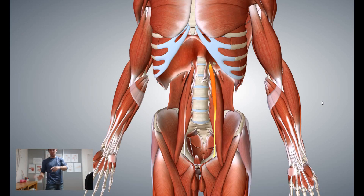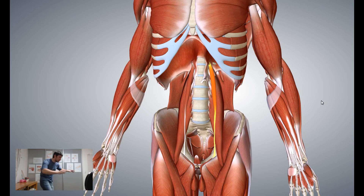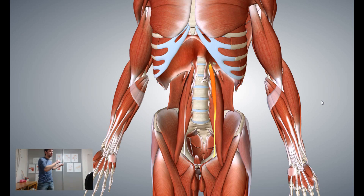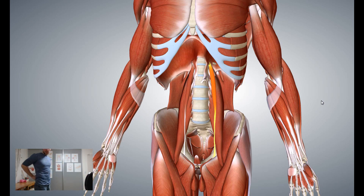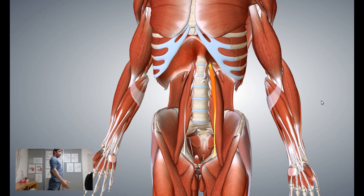The difference between the anterior oblique system and posterior oblique system is that the anterior oblique system involves more of a flexing type of motion — basically like a soccer kick. For the posterior oblique system, it's going to be mostly extension, going the opposite way.